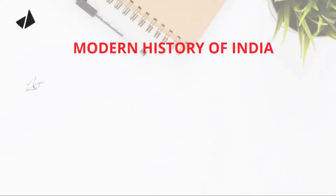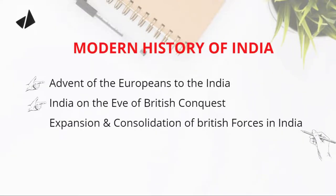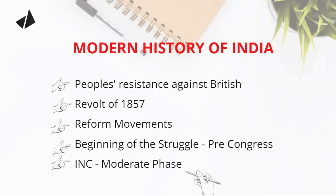First of all, let's take a look at what we are going to cover in the next one week. We are going to start with the advent of the Europeans to India, India on the eve of British conquest, expansion and consolidation of British forces in India, people's resistance against British, revolt of 1857, reform movements, beginning of the struggle — that is pre-Congress and Indian National Congress, moderate phase. So basically we are going to cover up to the beginning of the Indian National Congress.